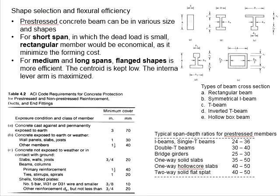Now we're going to look into some concepts of selecting the appropriate shapes for the efficiency of the flexural resistance of the member. In general, for short span in which the dead load is small, rectangular members would be economical.